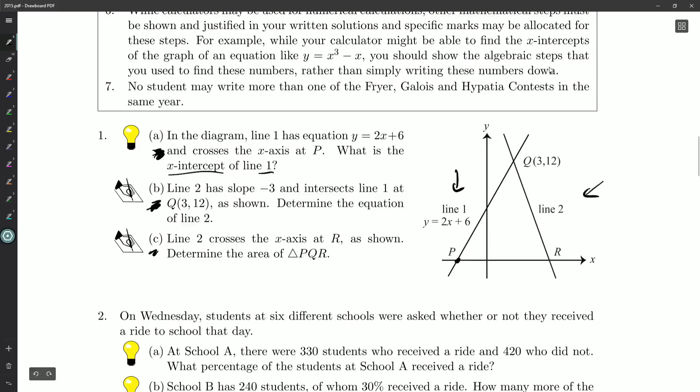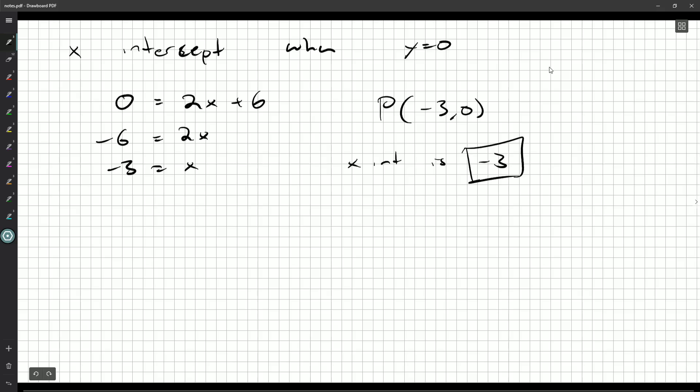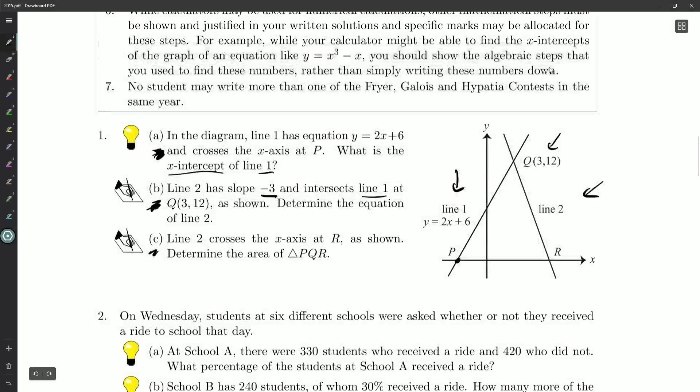Line two over here has slope negative three and intersects line one at (3, 12). Determine the equation of line two. So I know the slope is negative three and Q, which is at (3, 12) is on the line. All you need is a point and a slope. Now they're asking for the equation. There are lots of equations you could do. For example, if you wanted to use what's called point slope form of the line...